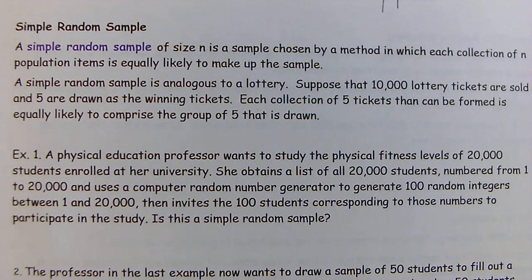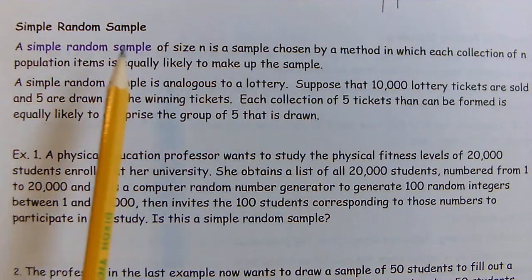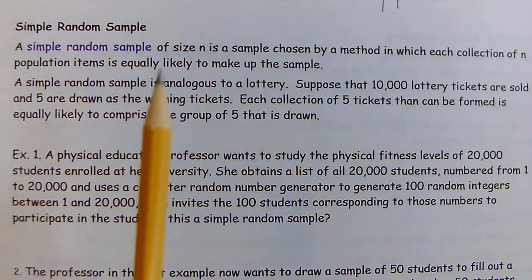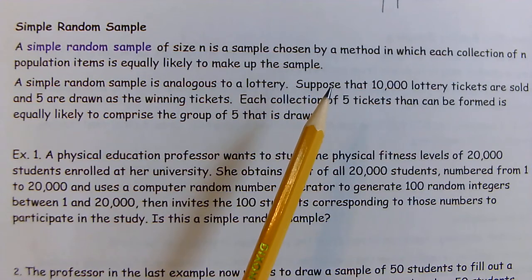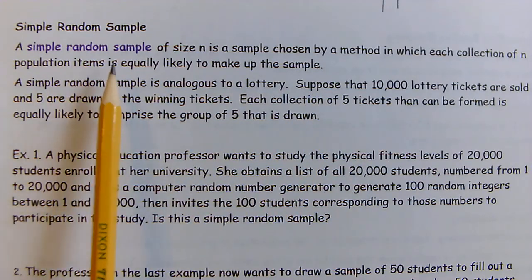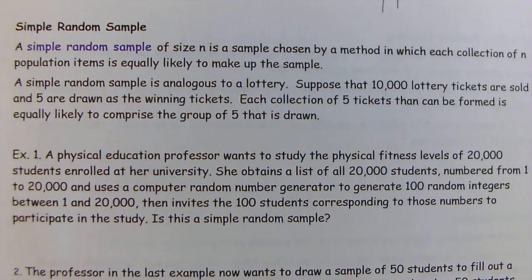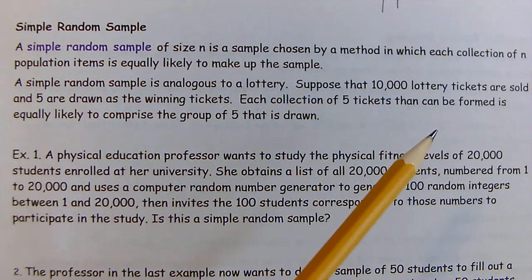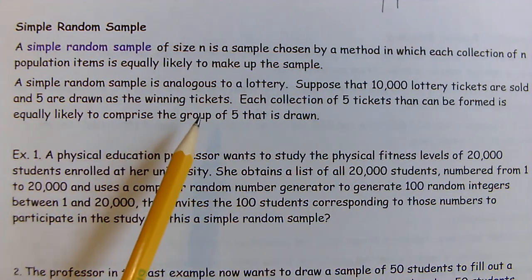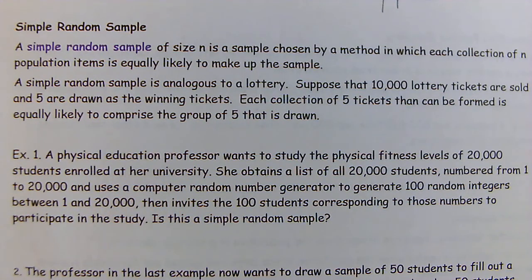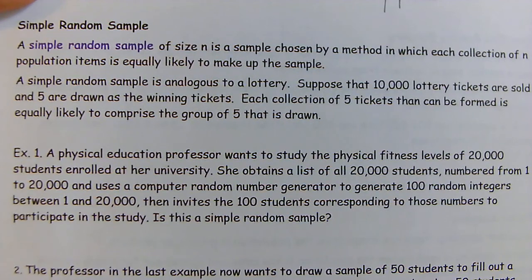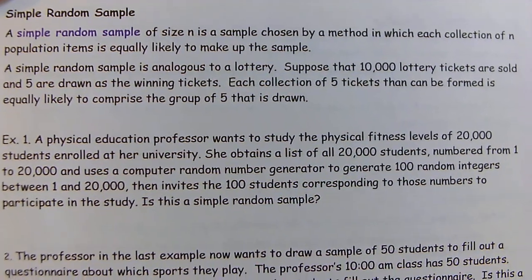A true sample has to be a simple random sample. It's chosen by a method in which each collection of population items is equally likely to make up the sample, so the sample truly represents the population because everybody was equally likely to be chosen. For example, 10,000 lottery tickets are sold and five are drawn as winning tickets — but every ticket is equally likely to be chosen.